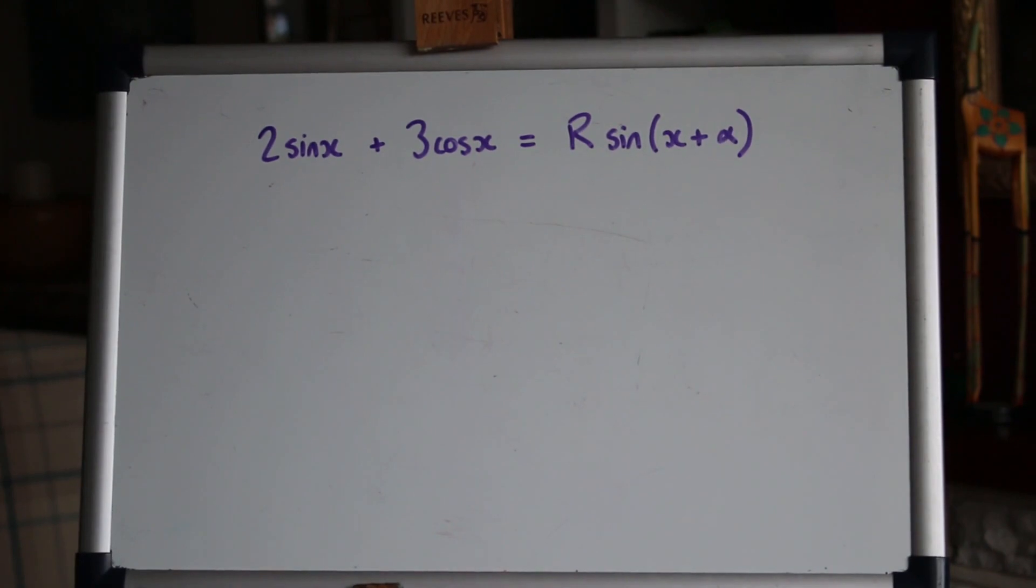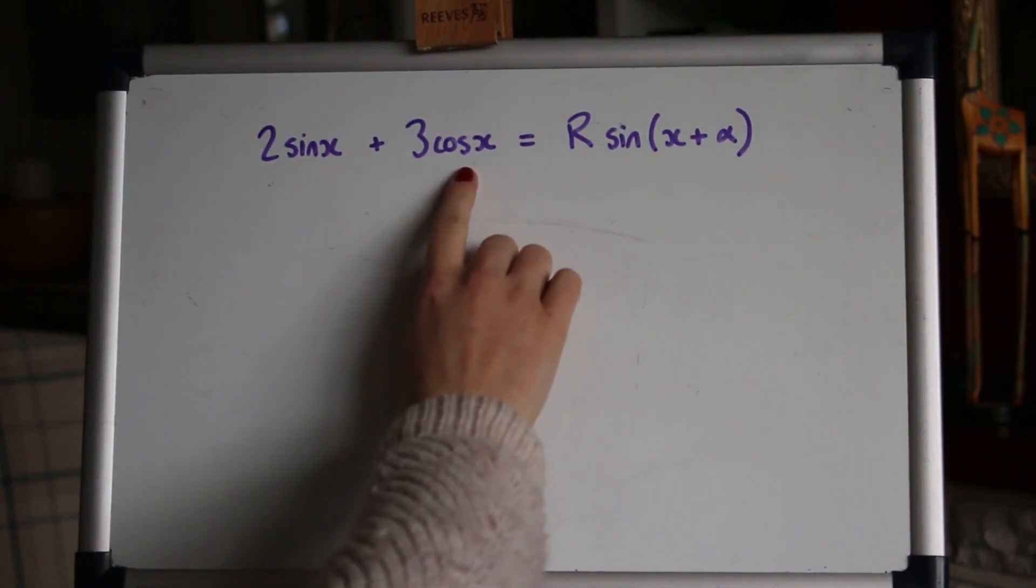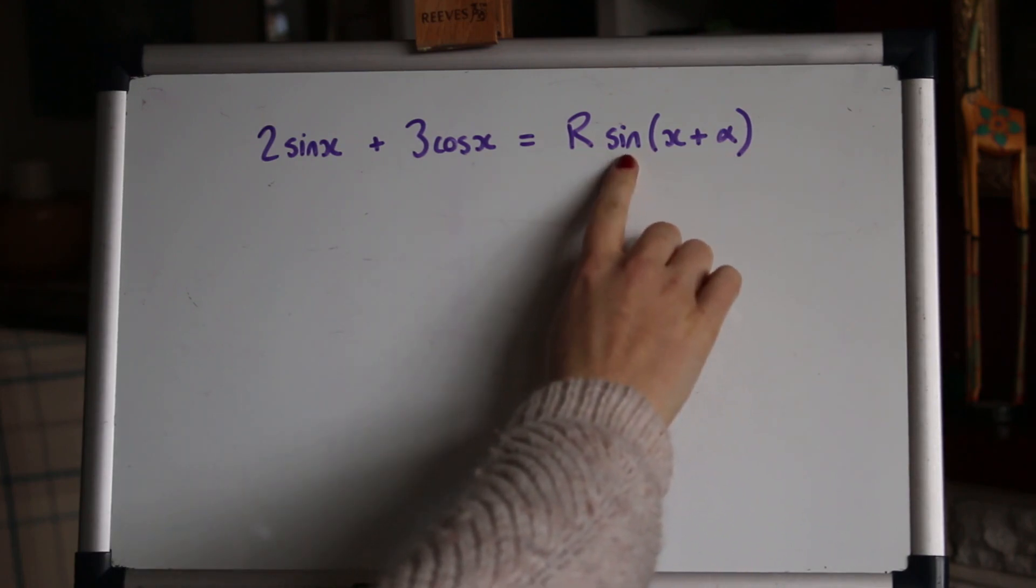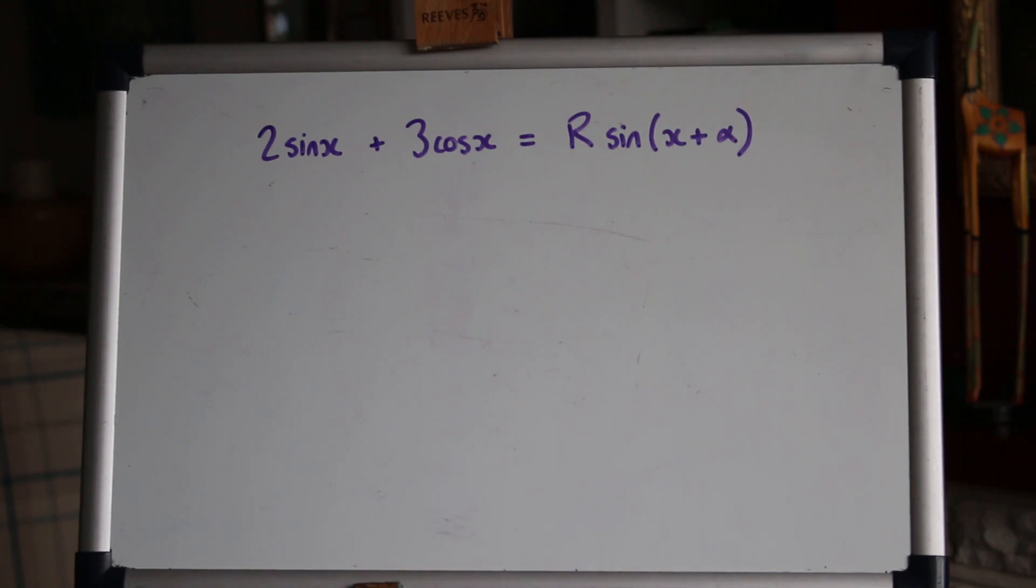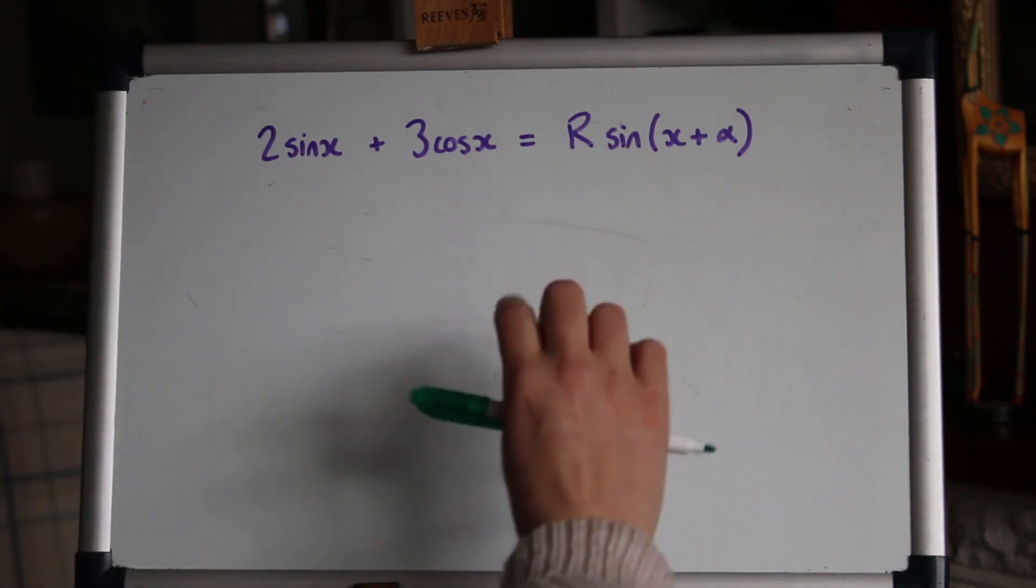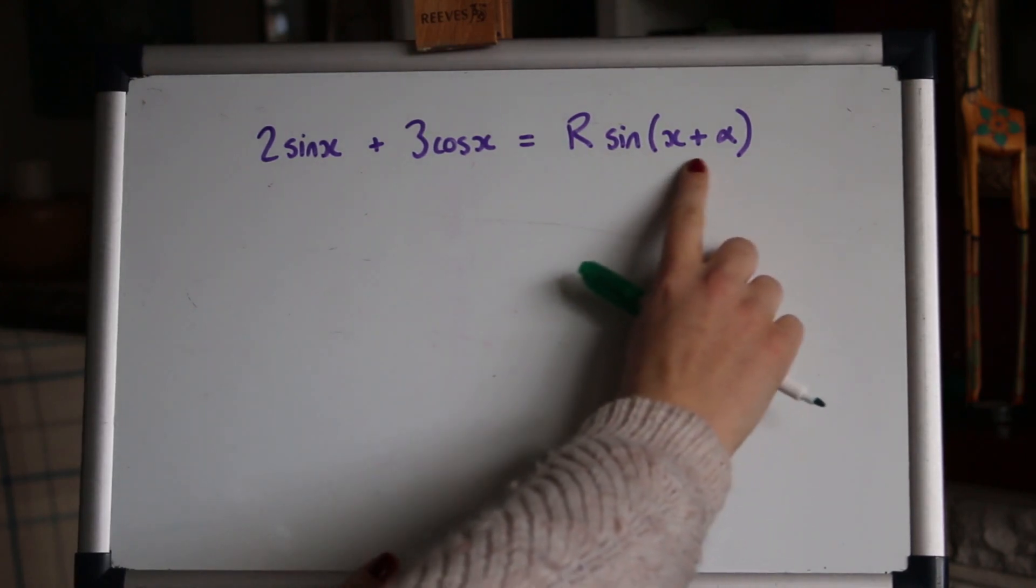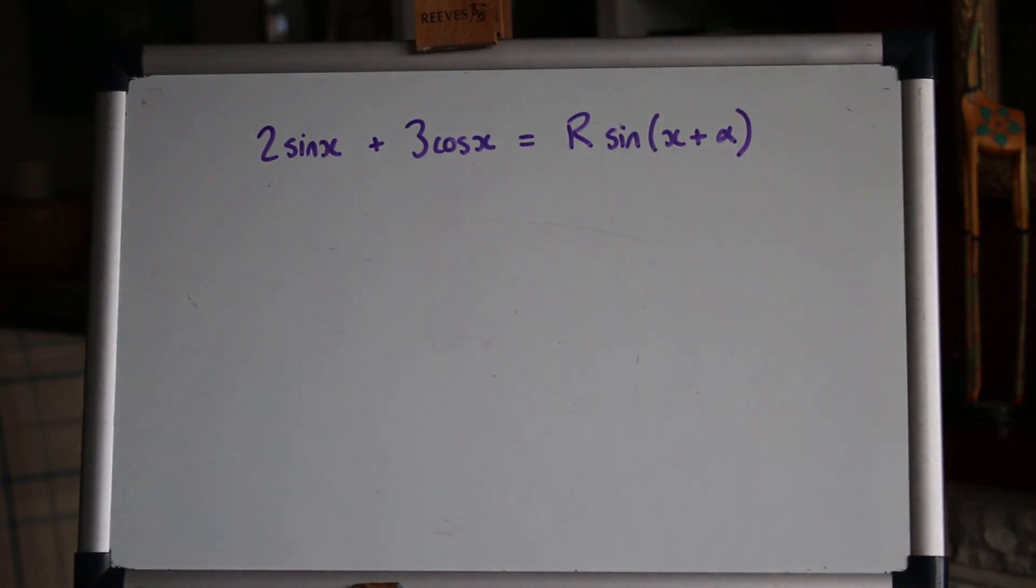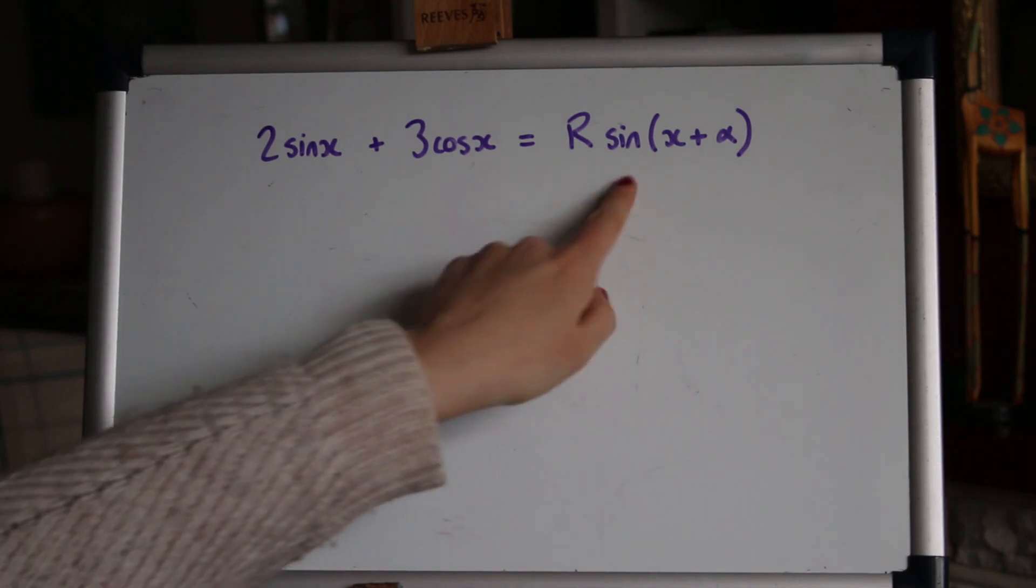So the R addition formula is when you're given something like this on the left hand side and you're asked to put it into this kind of form, either with sine or cos. Some people worry about whether to use sine or cos and typically it doesn't really matter, but in an exam question they would tell you what they want. So let's start off by putting this in the form of R*sin. We start with the only thing we can do really, and that's using the addition formula to expand out this bracket on the right hand side.